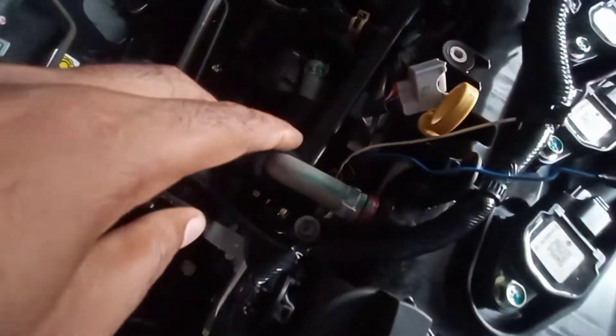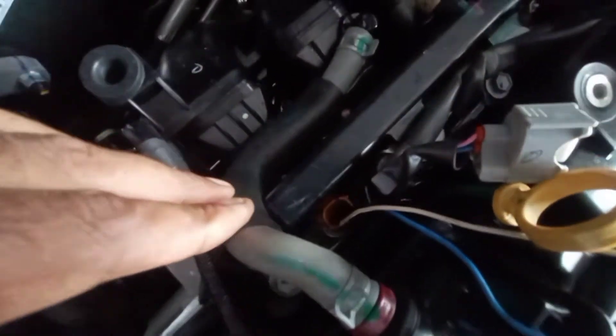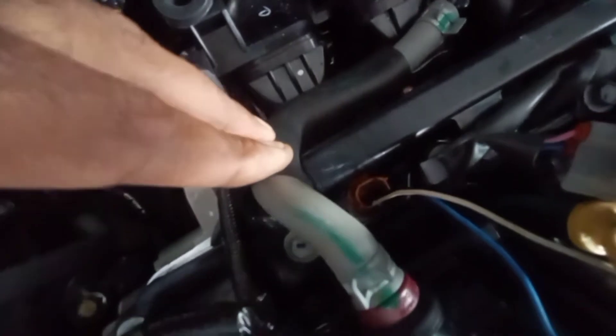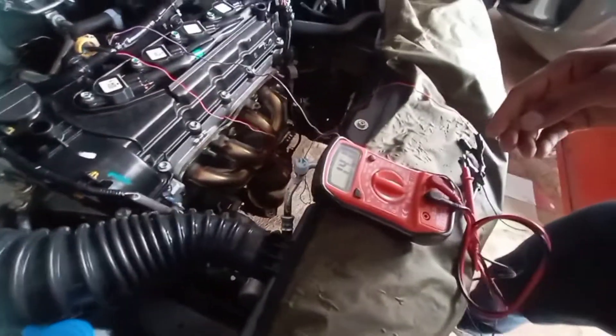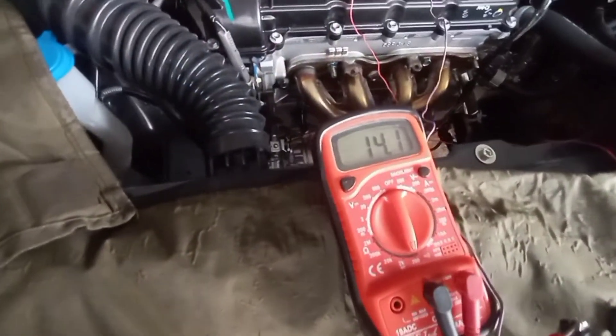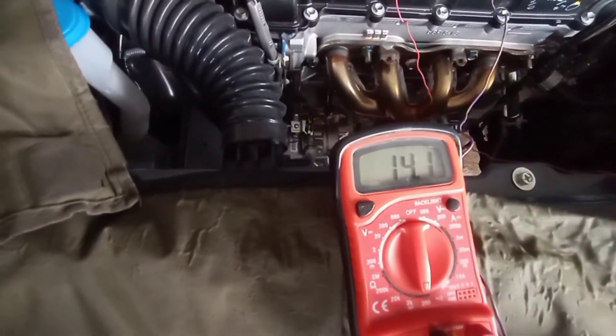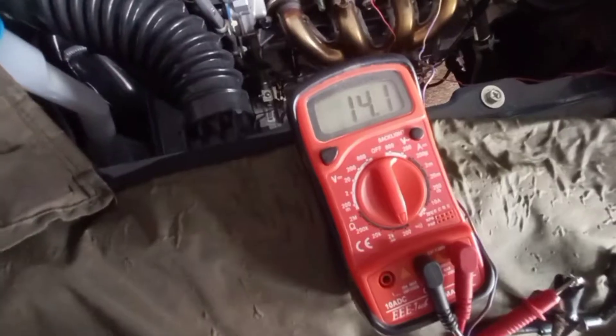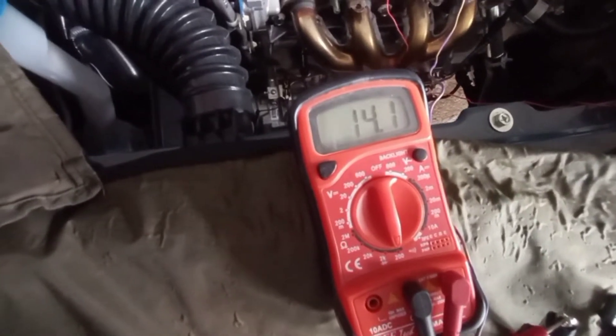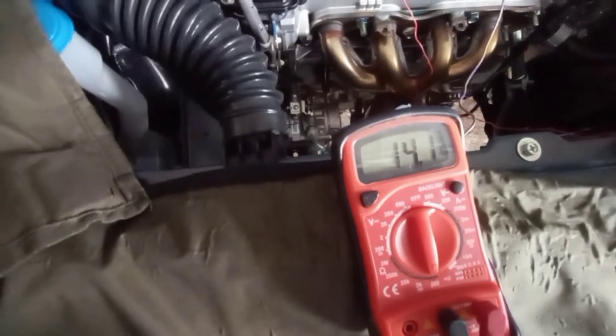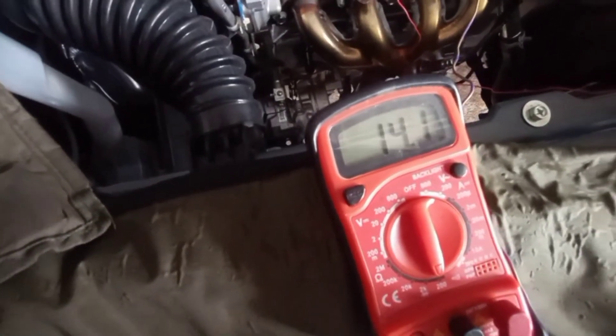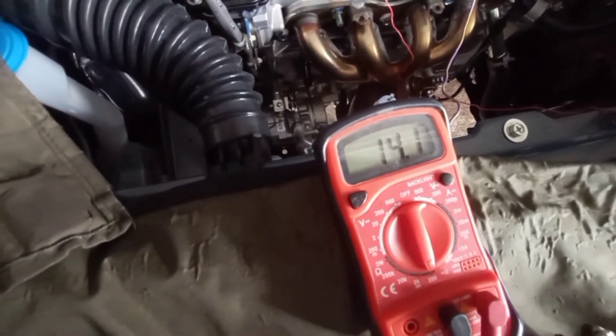Then connect the lead wire to fuel injector terminal number 1 fuel injector terminal. And the resistance is 14.10 ohm. Lead wire resistance is 1.4 ohm, and the final reading is 12.7 ohm. It is OK.